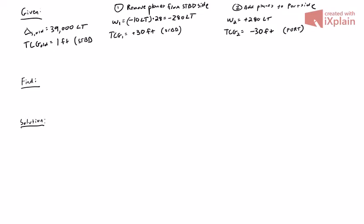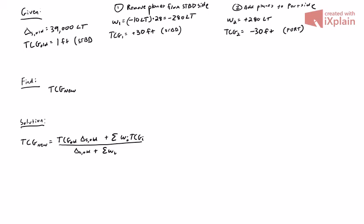That is all the given information. The problem asks us: what is the new transverse center of gravity, TCG new? We're going to use our equation: TCG new equals TCG old times old displacement, plus the sum of all the weight changes times the position of the weight changes, over the old displacement plus the sum of the weight changes.